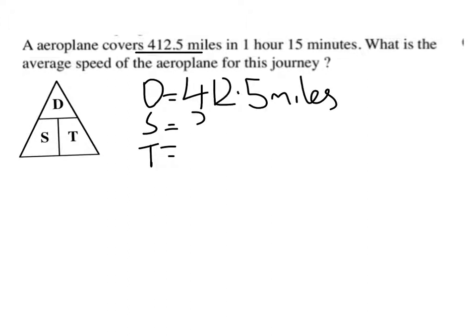Speed is what we need to calculate. Time is 1 hour and 15 minutes. Well, 15 minutes is a quarter of an hour, so I've got to write this in decimal terms. So it's 1.25 hours.